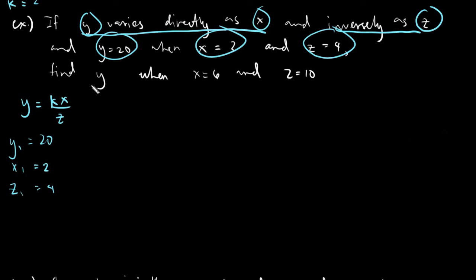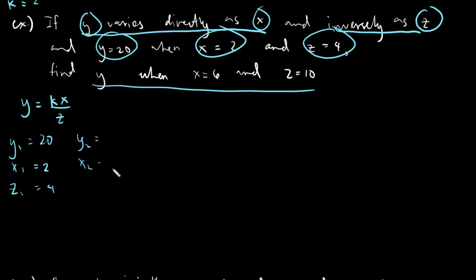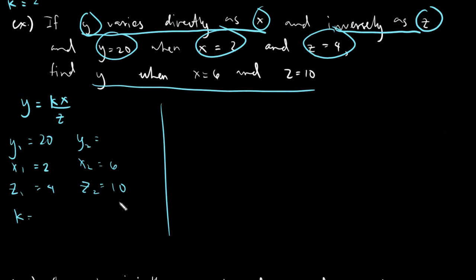The second set: y sub 2 is unknown, x sub 2 is equals to 6, and j sub 2 is equals to 10. Now let's solve for the very first thing we need in every variation problem — the k.